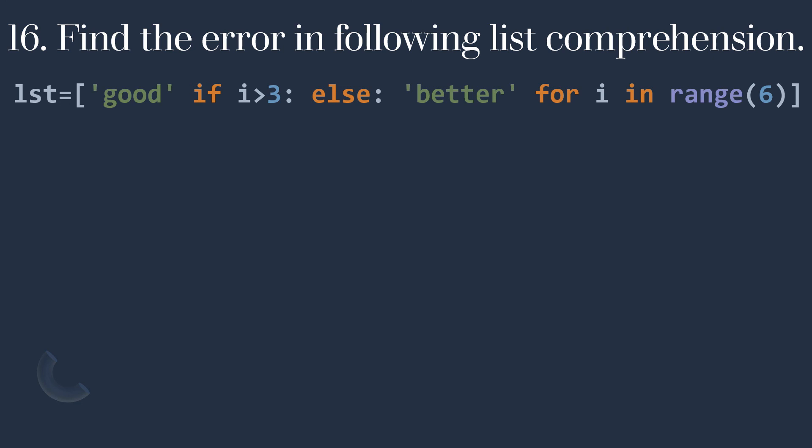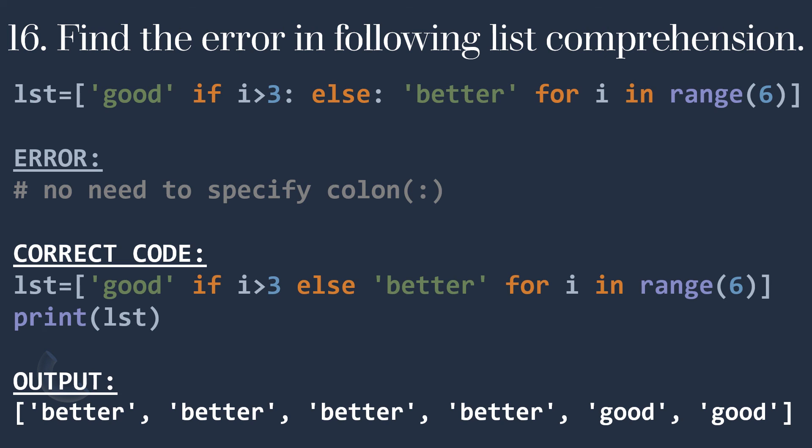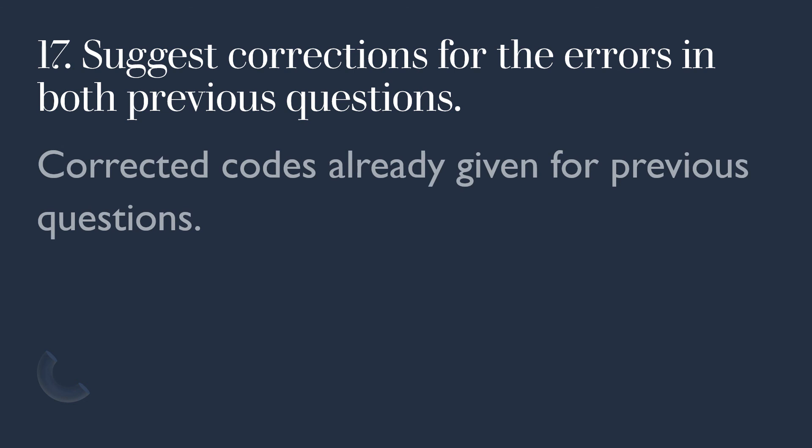The next question is to find the error in the following list comprehension: LST = ['good' if i > 3 : else : 'better' for i in range(6)]. In this type of list comprehension with a conditional expression, you don't need to specify the colon. The corrected code is LST = ['good' if i > 3 else 'better' for i in range(6)]. Printing LST shows 'better' for i values 0, 1, 2, 3 and 'good' for i values 4 and 5. We have already written the corrected codes for the previous questions — you can go back and check.